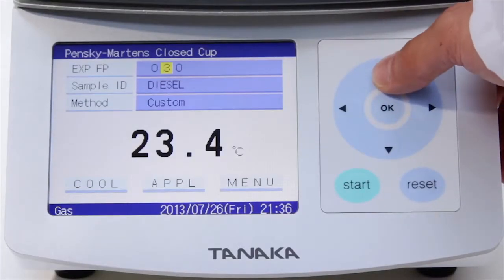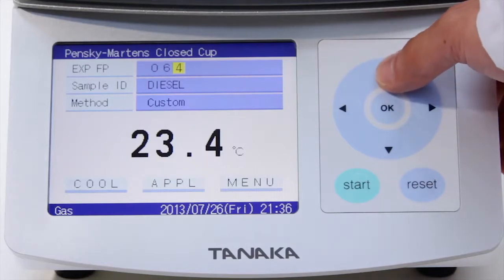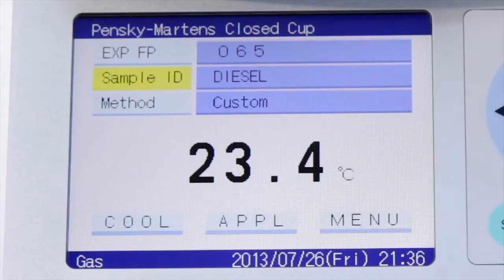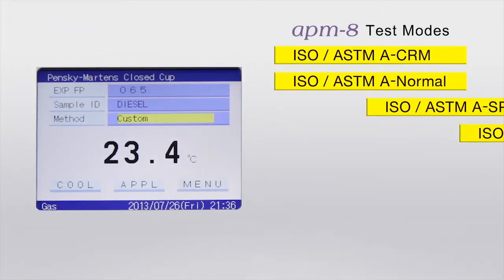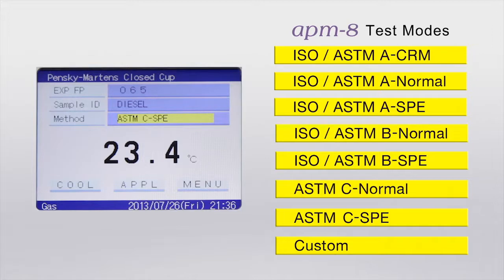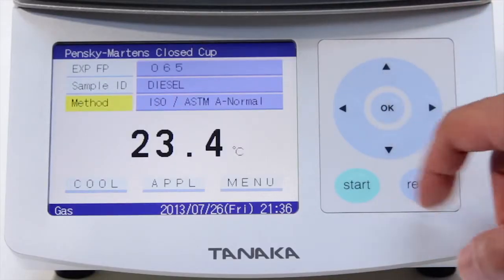There are only 3 steps to perform before starting a test. Enter the expected flashpoint. Enter a sample ID. Then select one of the 8 test modes. The CRM mode, for example, is suited for reference materials, normal modes for ordinary samples and SPE modes for unknown samples. Finally, press the start button.